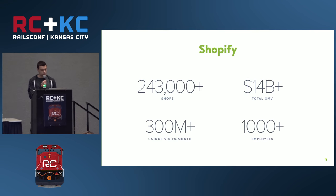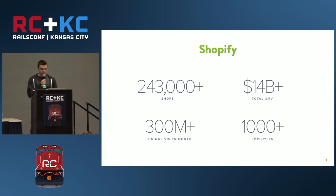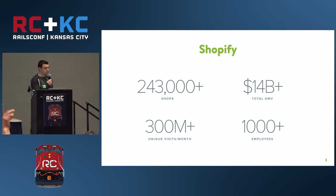To give you a little background on Shopify: Shopify has over 240,000 merchants. Over the lifespan of the company, we've processed $14 billion in sales. Any given month, we do about 300 million uniques, and we have over 1,000 employees.